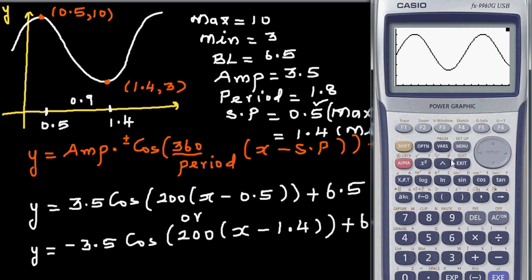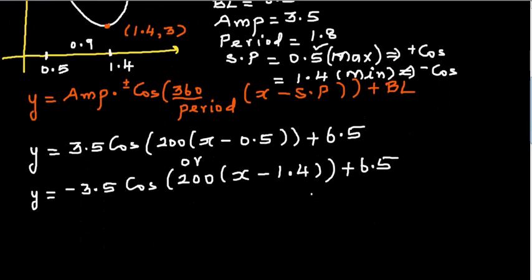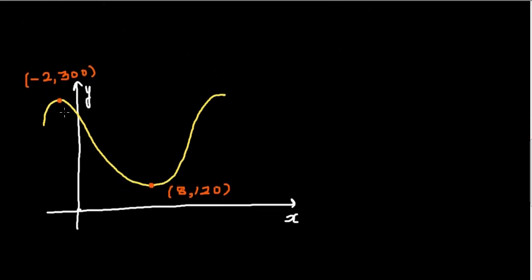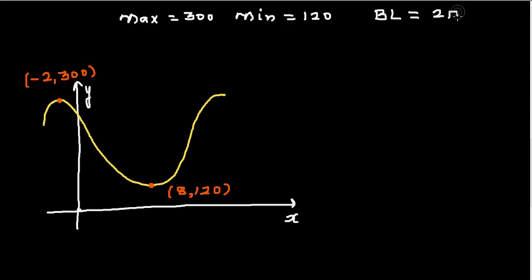Let's do one more graph, working faster this time. The maximum is 300 and the minimum is 120. Adding them gives 420, so the baseline is 210. The amplitude is 90, since 210 + 90 = 300 and 210 − 90 = 120.